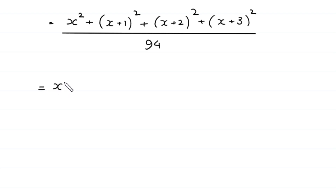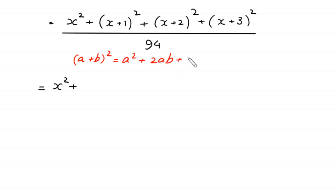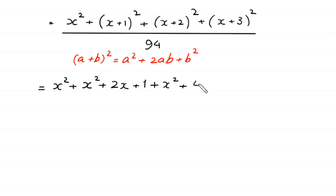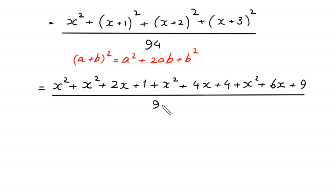Next, using the algebraic identity (a+b) squared equals a squared plus 2ab plus b squared, we expand each term. (x+1) squared equals x squared plus 2x plus 1; (x+2) squared equals x squared plus 4x plus 4; (x+3) squared equals x squared plus 6x plus 9. All divided by 94.